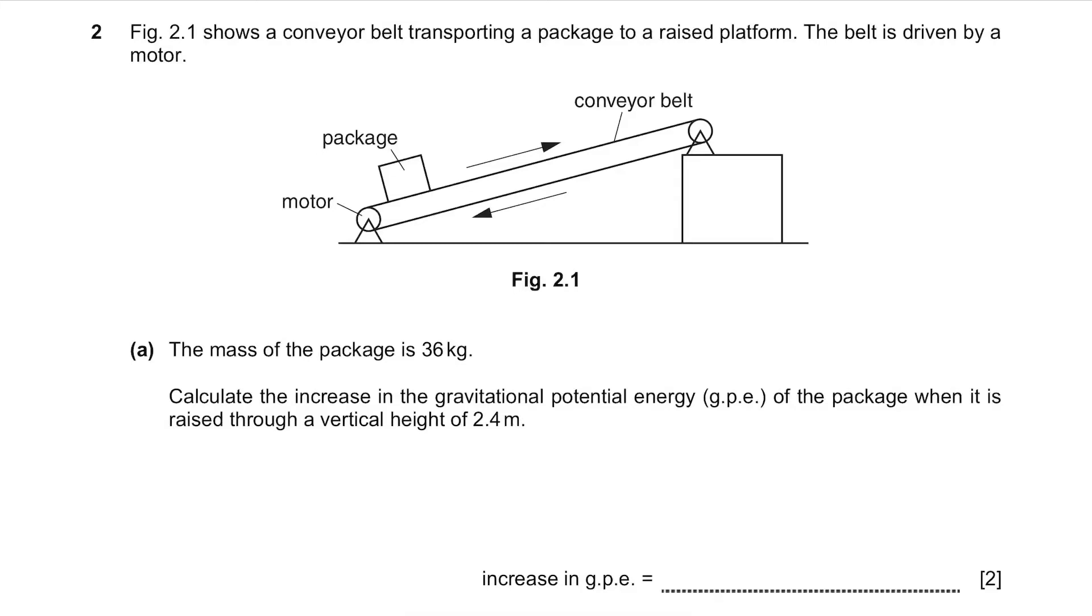Question 2. Figure 2.1 shows a conveyor belt transporting a package to a raised platform. The belt is driven by a motor. The mass of the package is 36kg. Calculate the increase in the gravitational potential energy of the package when it is raised through a vertical height of 2.4m.